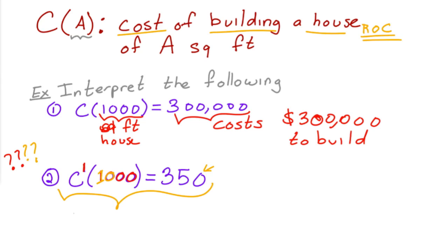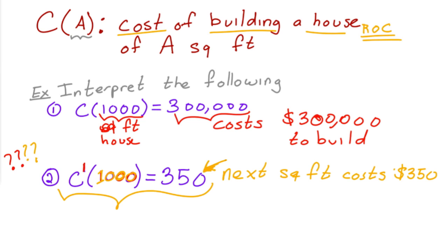Another way of saying this that makes more sense: once you have built one thousand square feet, since this is the rate at which it's increasing, to build one more square foot after a thousand — the very next square foot — is going to cost about three hundred and fifty dollars. That doesn't mean if you want to build one thousand more square feet each one costs $350; it's just telling you that exactly at that instant, one more square foot costs you about $350.